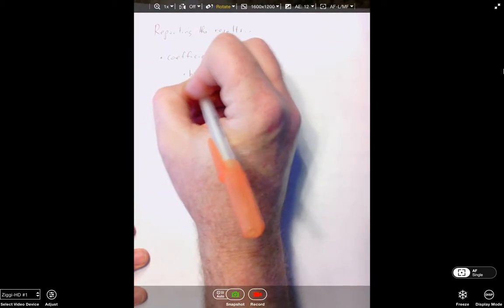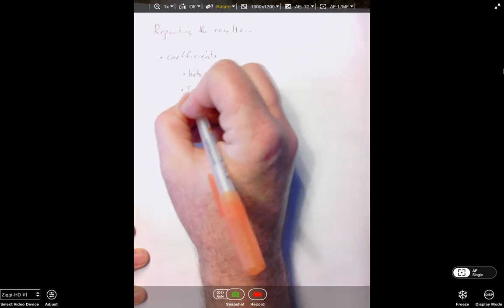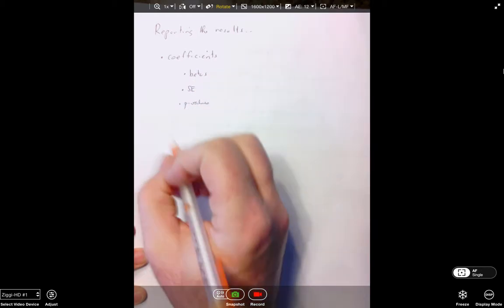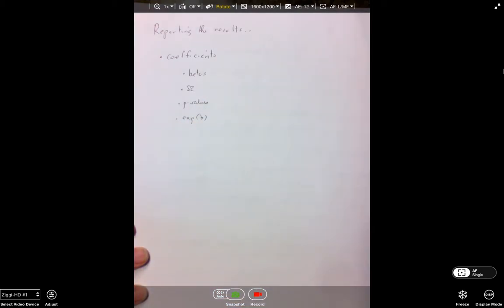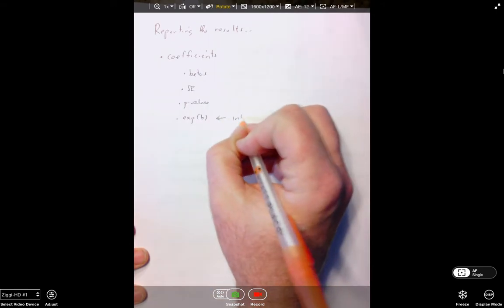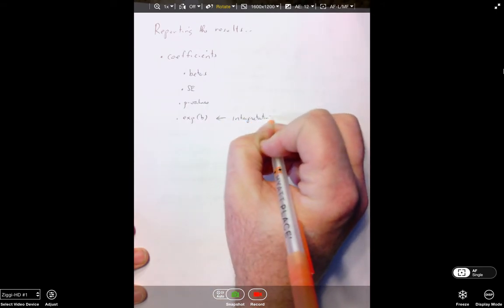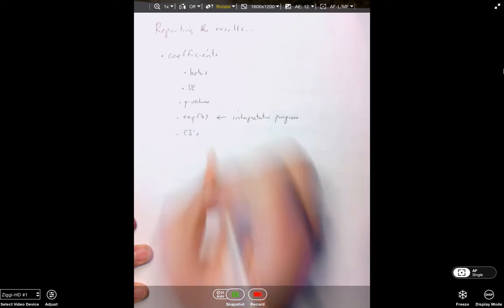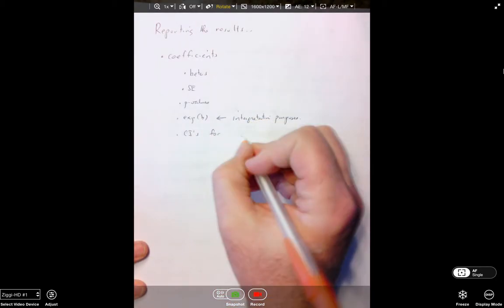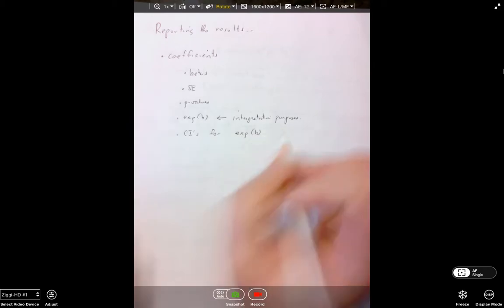I would think that would include the betas, the standard errors for the betas, the p values, and the exp, the betas or e raised to the betas. And this is for interpretation purposes. I would think you'd also want confidence intervals for exp betas. So I'd want the point estimate and the confidence interval for each of the predictors.